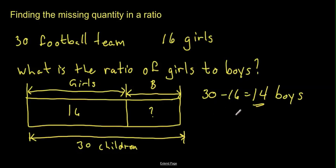So, now, to describe that as a ratio, all we need to say is number of girls is 16, and number of boys is 14.